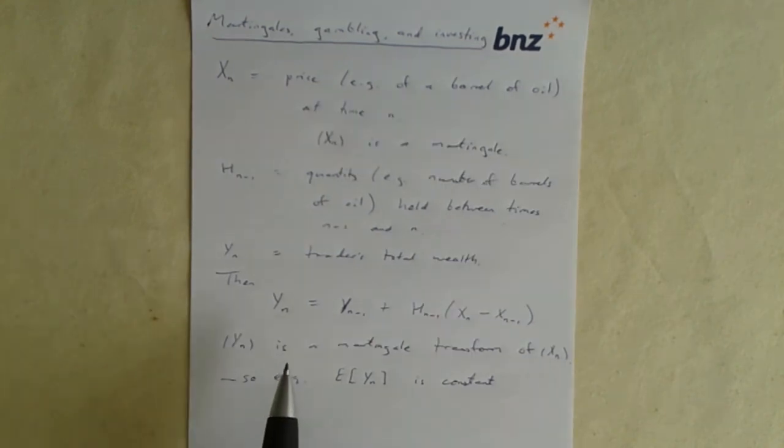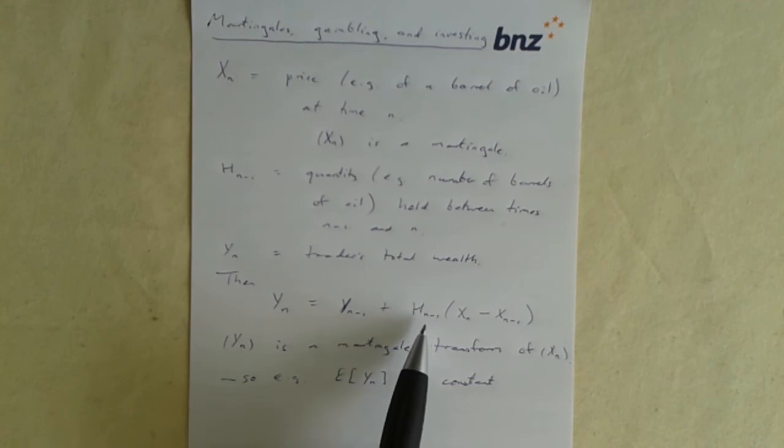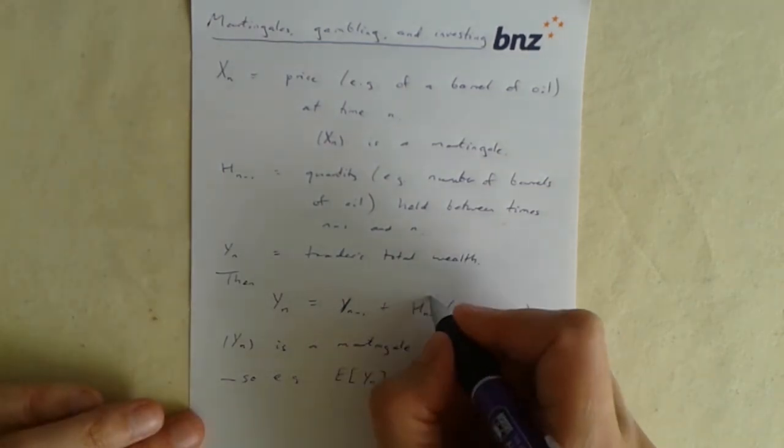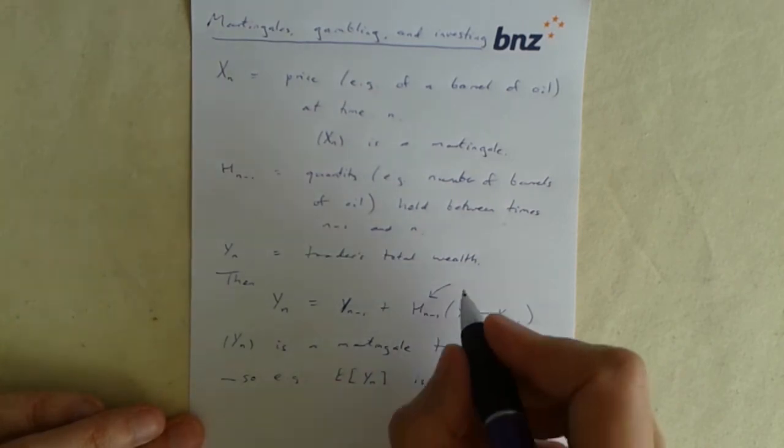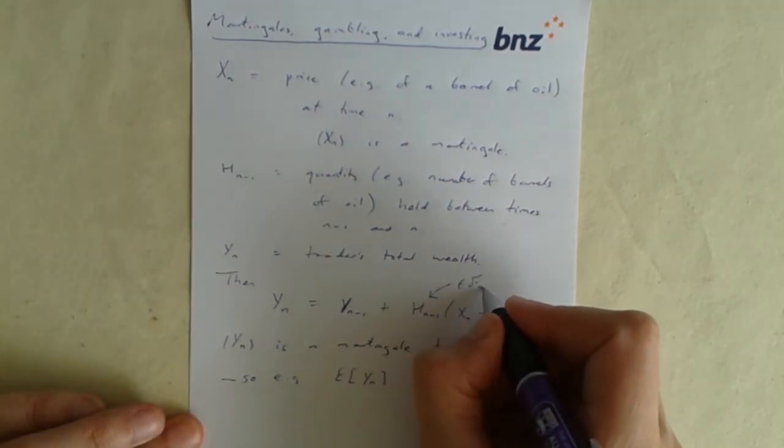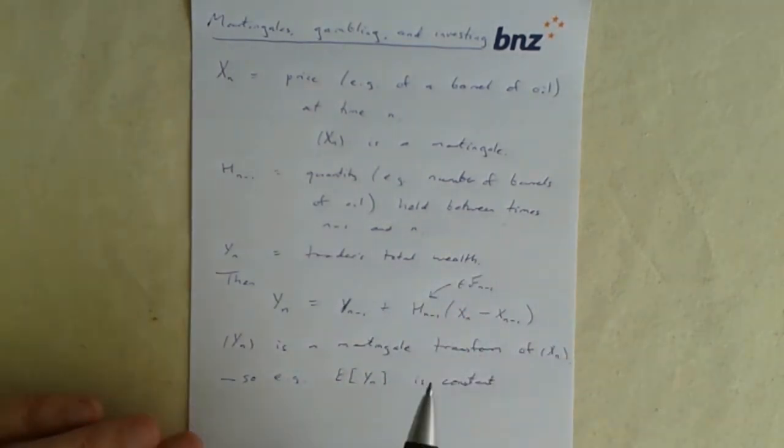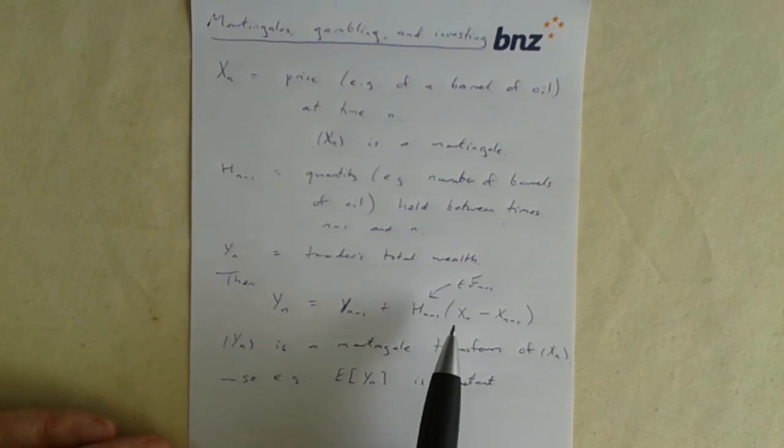And that tells us something about how much ability the trader has to make money. In particular, it tells us that in expectation, he can't make money. The expectation of a martingale is a constant. Now, a key property here is that this was h n minus 1 we used.